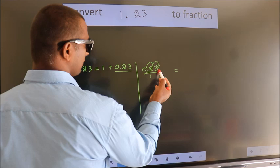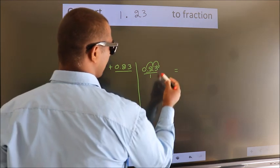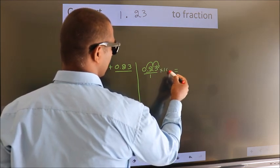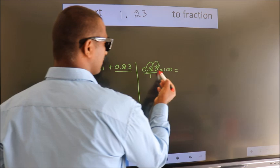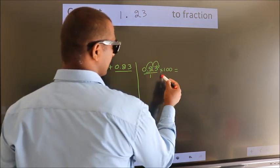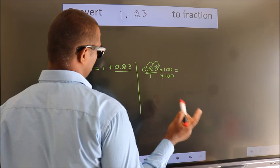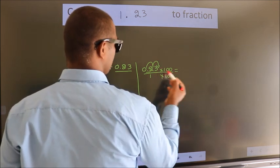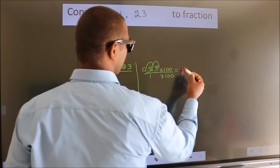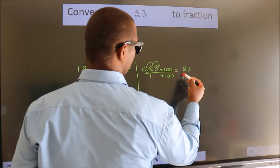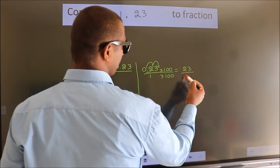To move the decimal after two numbers, we should multiply it by 100. Whatever we multiply in the numerator, in the denominator we should do the same. Next, 0.23 times 100 equals 23. 1 times 100 equals 100.